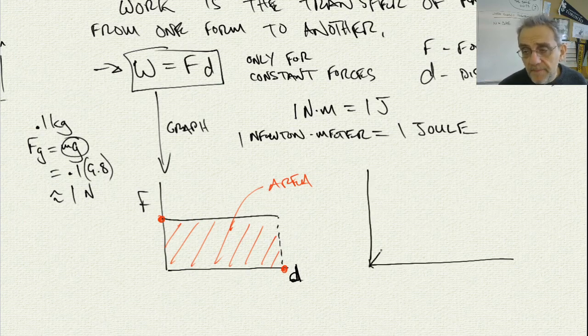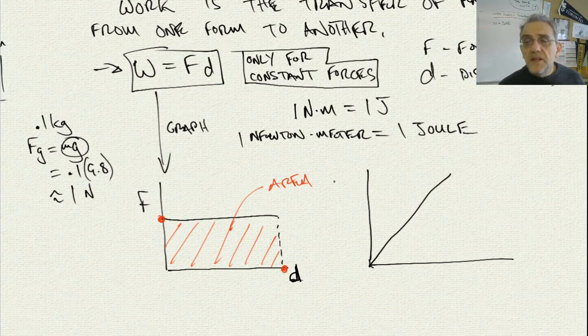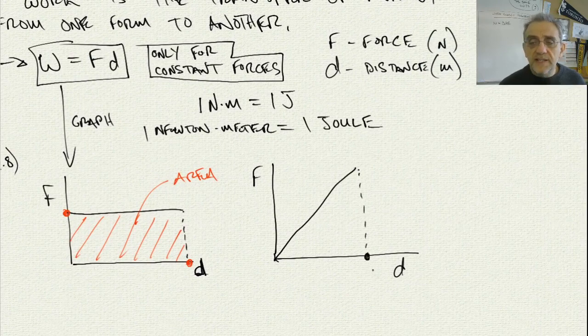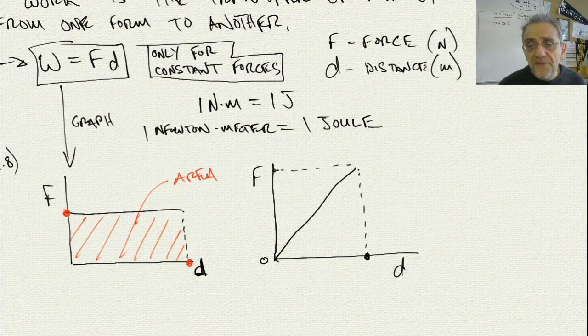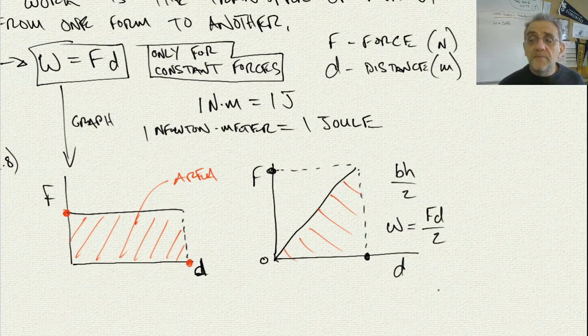The reason why I stress this is because if we were to change the force such that the force is no longer constant. Notice here I said this is only for constant forces. Well now guess what? The force is not constant. So now if we were to try and figure out what is the work done for a varying force that varies from zero all the way up to F. Well now the area under the graph is a triangle, and we know that the area of a triangle is base times height divided by two. So in this case, the work done would be the base is D, the height is F, so we could say FD over two.